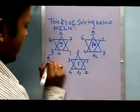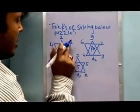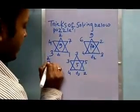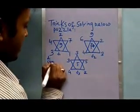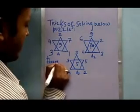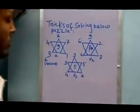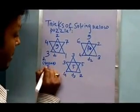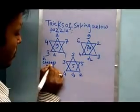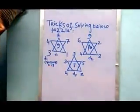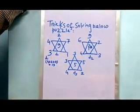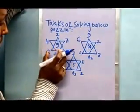we add numbers in top vertices, that is 4 plus 2 plus 7, what we get? The result is equal to 13. And if we add the numbers of